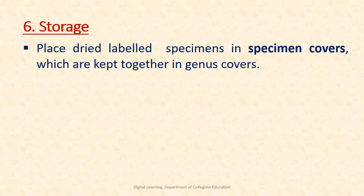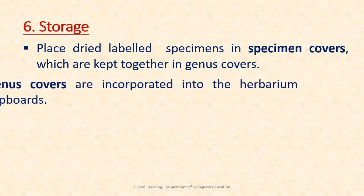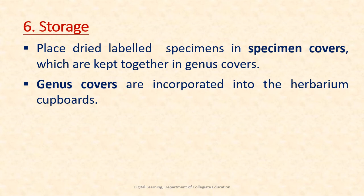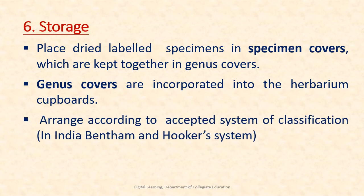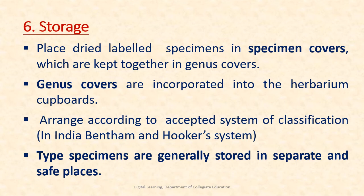The sixth step is storage. The dried, pressed, and identified specimens are placed in a specimen cover, which are kept together in a genus cover. Genus covers are incorporated into herbarium covers and are arranged according to a well-known system of classification. In India, the Bentham and Hooker system of classification is used for this purpose. Type specimens are generally stored in separate and safe places.